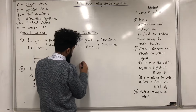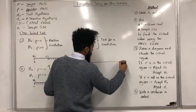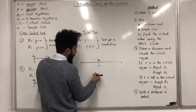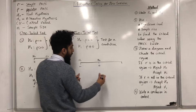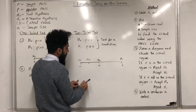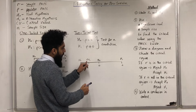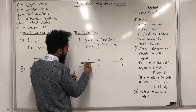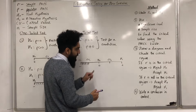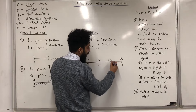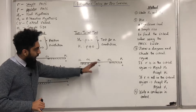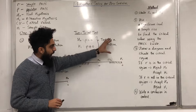H0 represents zero. H1 can represent a negative or a positive value. Here is my first critical value — anything that is this critical value or less represents the critical region, so I can shade it in. Here is my second critical value — anything that is this critical value or more represents my critical region, so I can shade in the critical region. That is a diagram modelling a two-tail test — a test for a correlation.